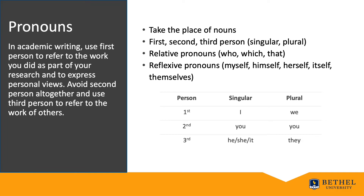One of the changes in the seventh edition of the APA manual is that the singular 'they' or 'their' can be used as a gender-neutral pronoun. In academic writing, use first-person pronouns to refer to the work you did as part of your research and to express your own views in reflection or personal application papers. Avoid second-person pronouns altogether in academic writing, and use third-person pronouns to refer to the work of others, like you would in a literature review.